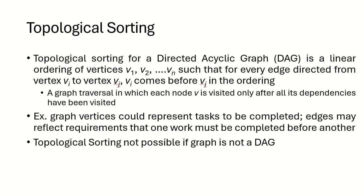In this video we are going to take a look at topological sorting in a graph. Topological sorting is only for a directed acyclic graph or DAG, and this sorting is a linear ordering of vertices v1, v2 to vn, if there are n vertices, such that for every edge directed from v1 to vj, v1 comes before vj in the ordering.